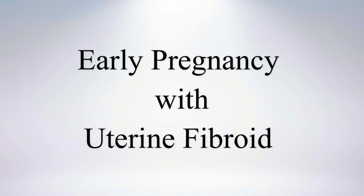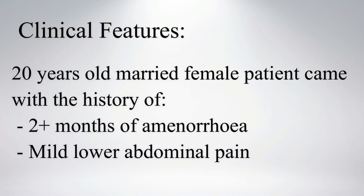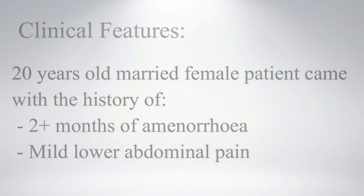Hi everyone, let's see a case of early pregnancy with uterine fibroid. A 20-year-old married female patient came with the history of more than two months of amenorrhea and mild lower abdominal pain.